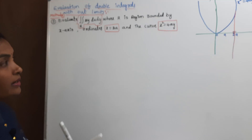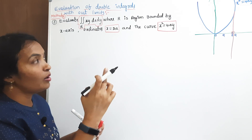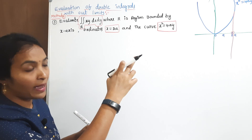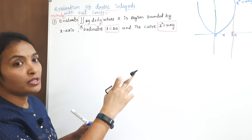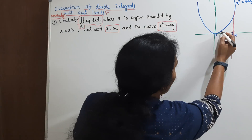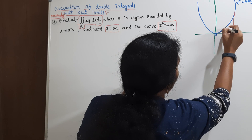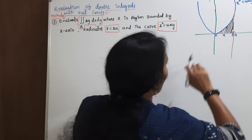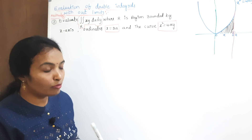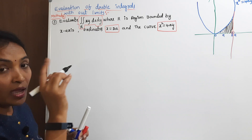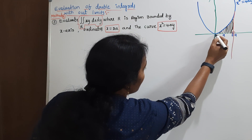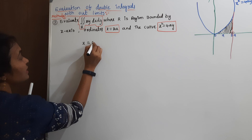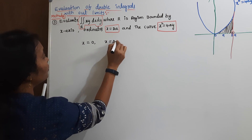Now, how do we find the limits? Look at the bounded region between the parabola and the line — this is the intersecting area, bounded on the x-axis. In this region, x starts at 0 (where the line touches first) and x ends at 2a (where the curve ends). So x limits are x = 0 to x = 2a.